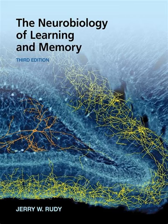7. Learning and Memory Disorders. The book touches on disorders related to learning and memory, including amnesia, Alzheimer's disease, and other neurodegenerative conditions. It explores the neural basis of these disorders and their impact on cognitive function.